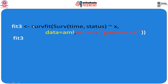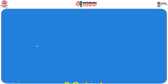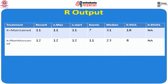Coming to the third objective — the Greenwood formula method. In earlier slides we found the standard error for the maintained and non-maintained groups. There are different procedures to calculate the standard error; one method is the Greenwood method. In the survfit() call, in addition to Surv(time, status) with covariate X and data = aml, we add the argument error = 'greenwood', so that the standard error is computed using the Greenwood formula for the Kaplan-Meier estimator.